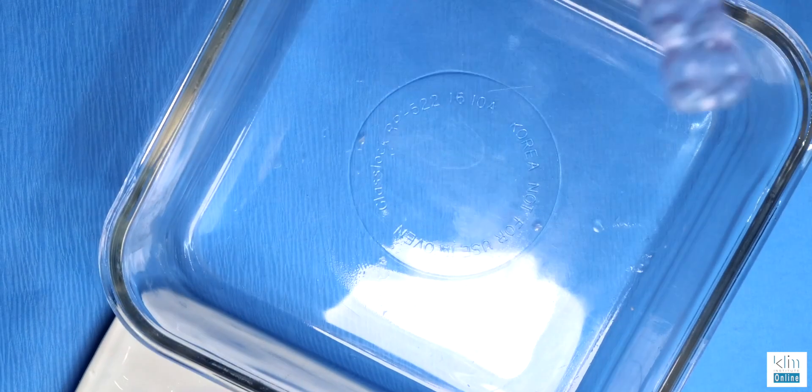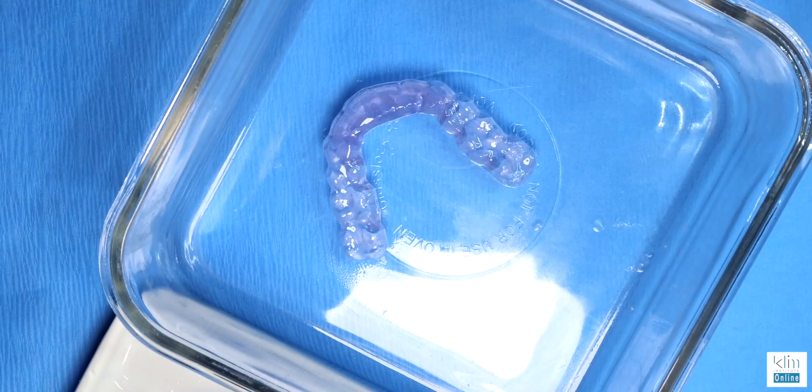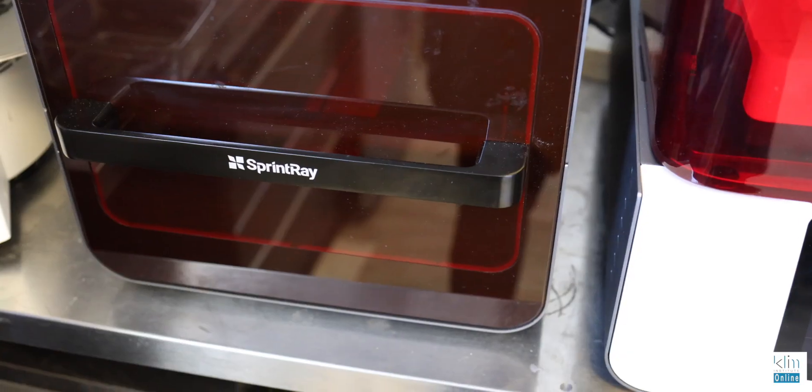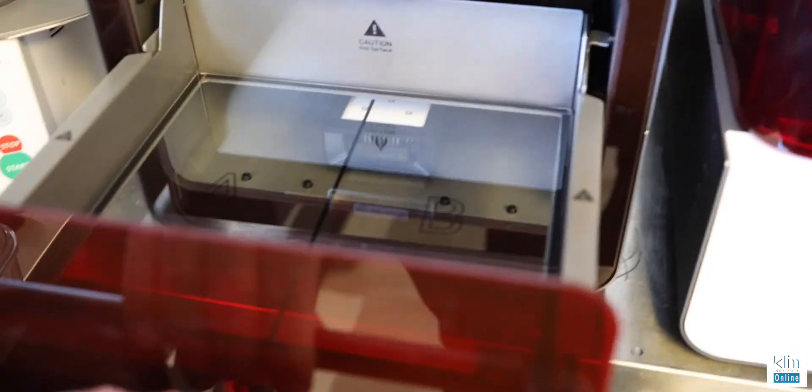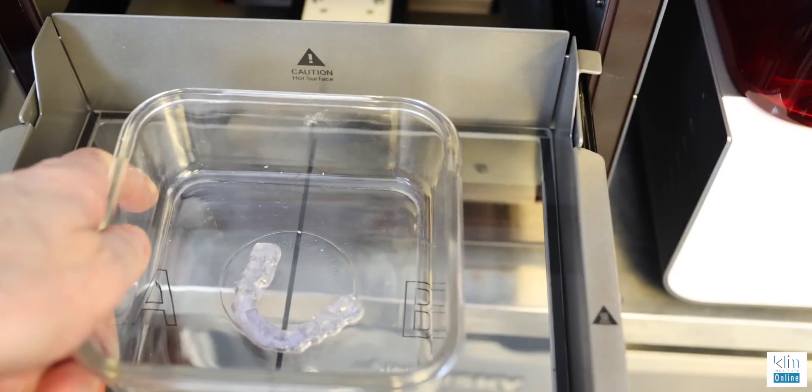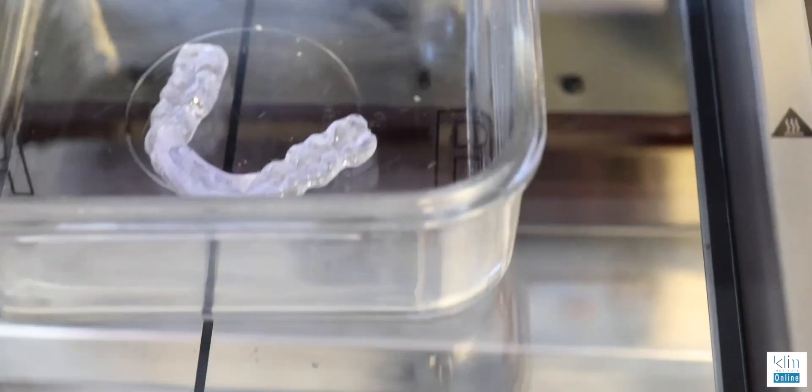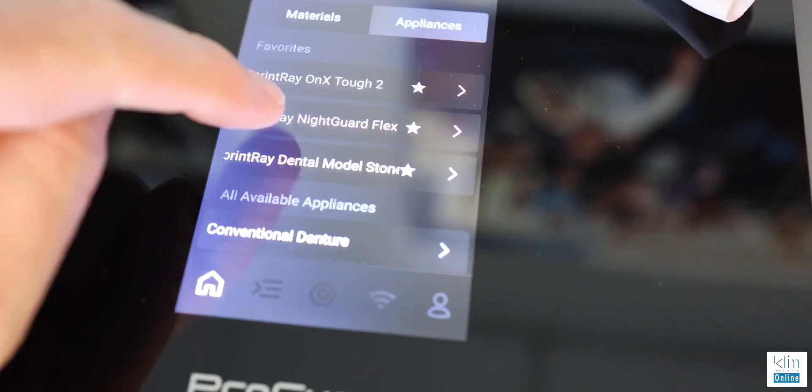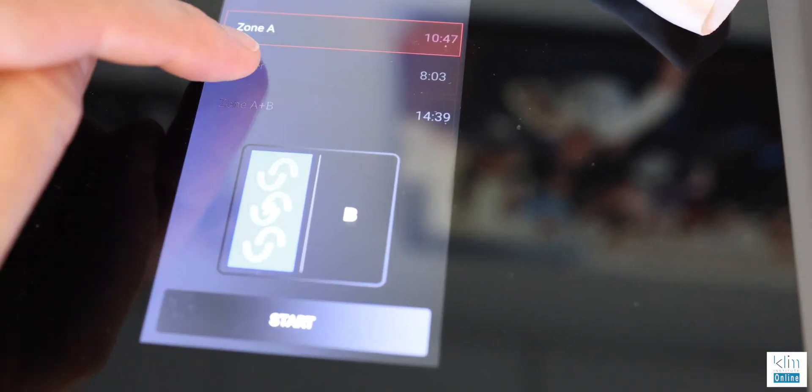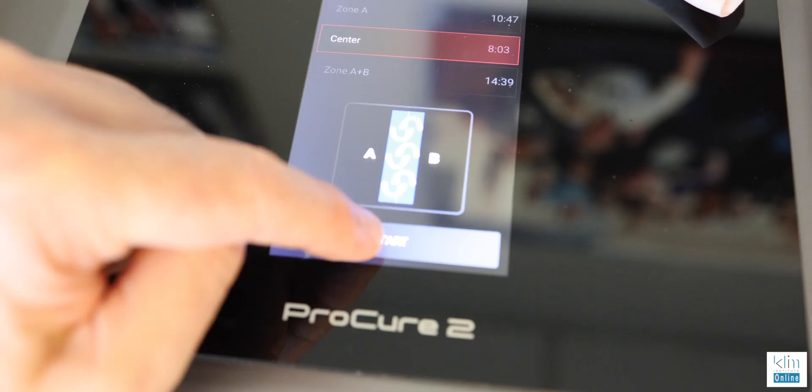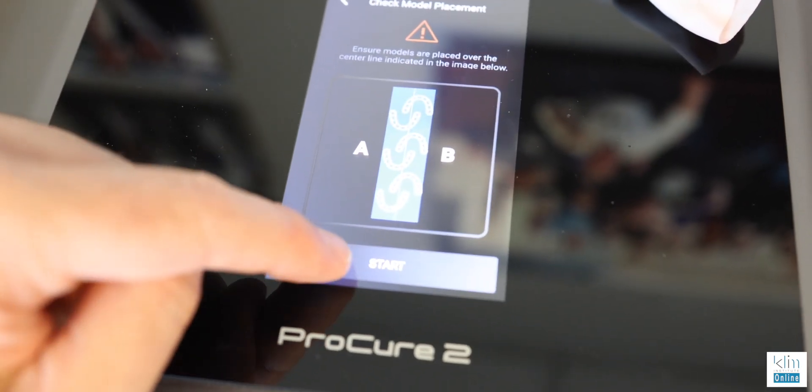To keep the ProCure from getting gooed up with uncured resin, we're going to use a glass ceramic. We're placing the internal component of that appliance down. Place it in the middle and then choose the middle curing option, and that will take 8 minutes.